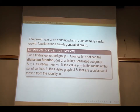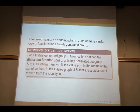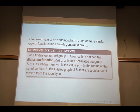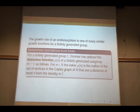Before talking about the growth rate of an endomorphism on the semi-direct product, I want to remind you of a very interesting definition by Gromov. If you have a finitely generated group, Gromov defined the distortion function rho_n of a finitely generated subgroup H in gamma: for a natural number n, the value rho(n) is the radius of the set of vertices in the Cayley graph of H that are at distance at most n from the identity in gamma.